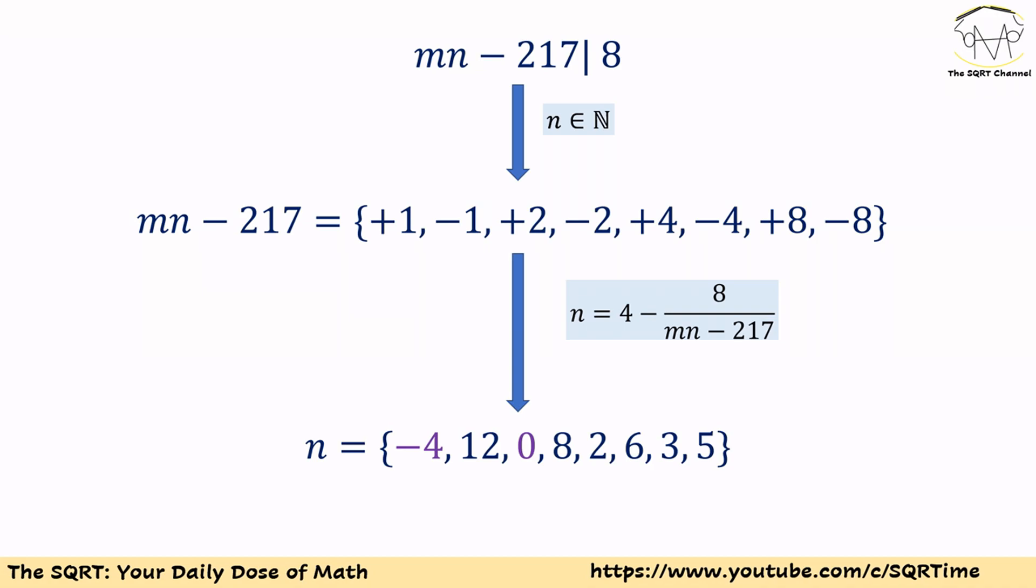Now that we have the values for mn - 217, we will find the value that we have for n. If we do so we will get -4, 12, 0, and so on. Remember we wanted to have a positive integer for n, so -4 and 0 cannot be acceptable.